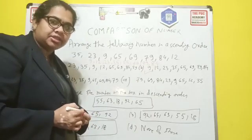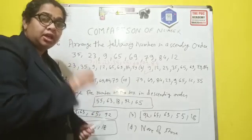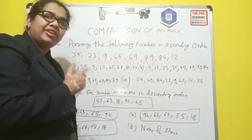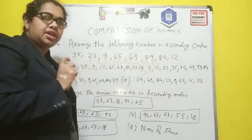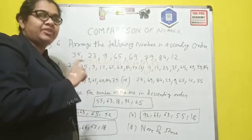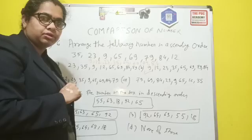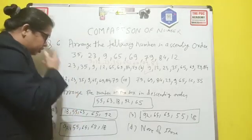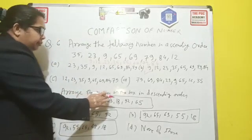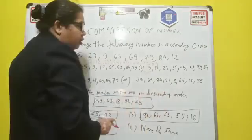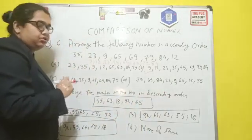So I think you understand how to solve this type of question. It is very easy but very confusing also. Check always twice when you tick the answers. Okay children. Next question is arrange the number in the box in descending order. Just reverse of this question.